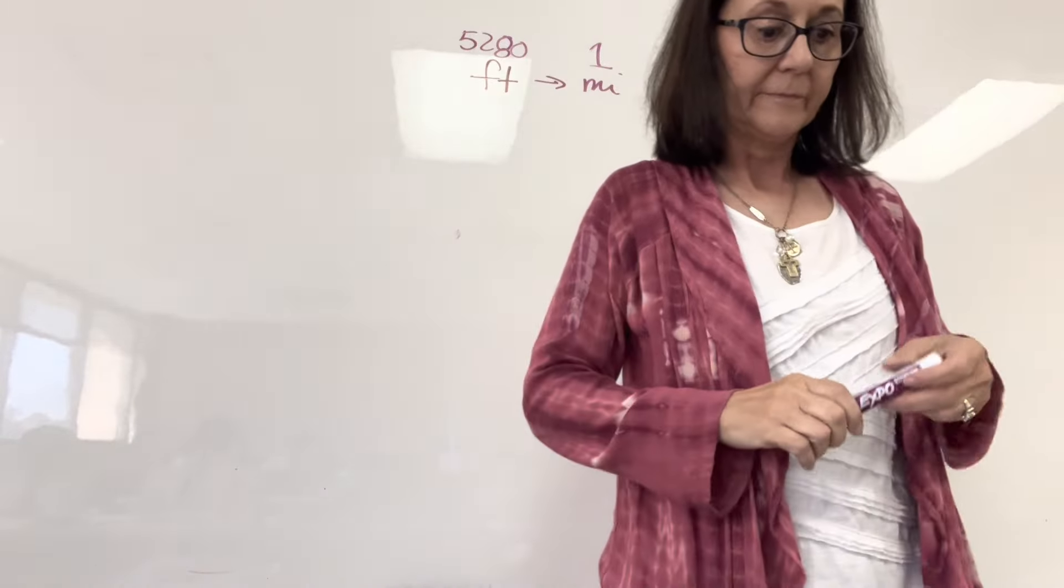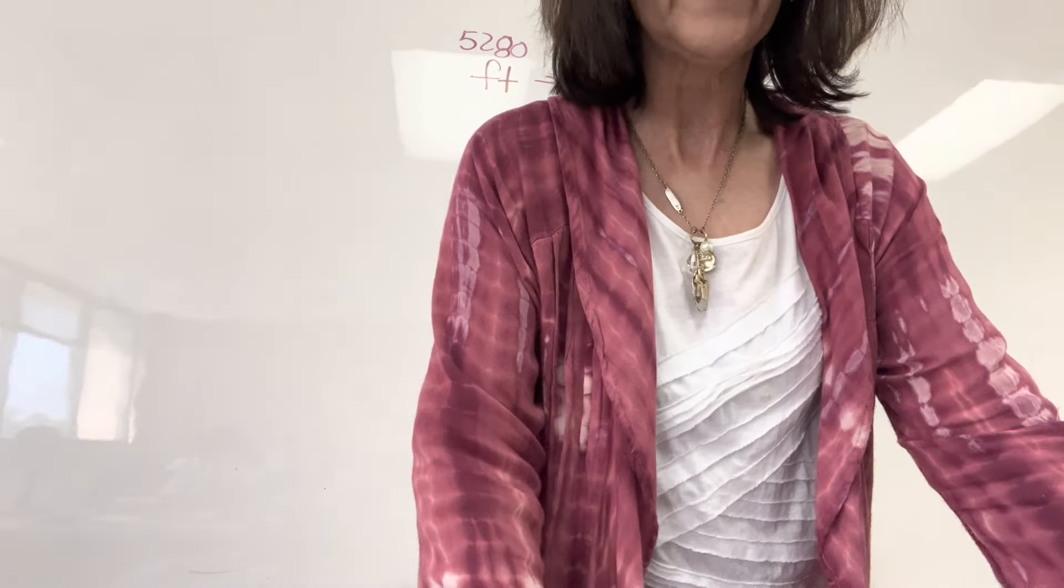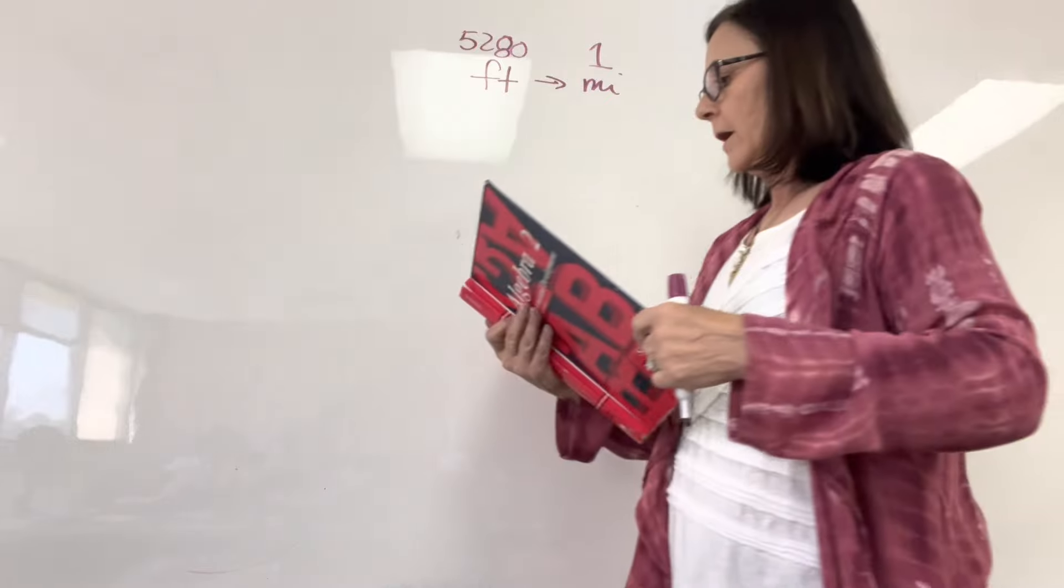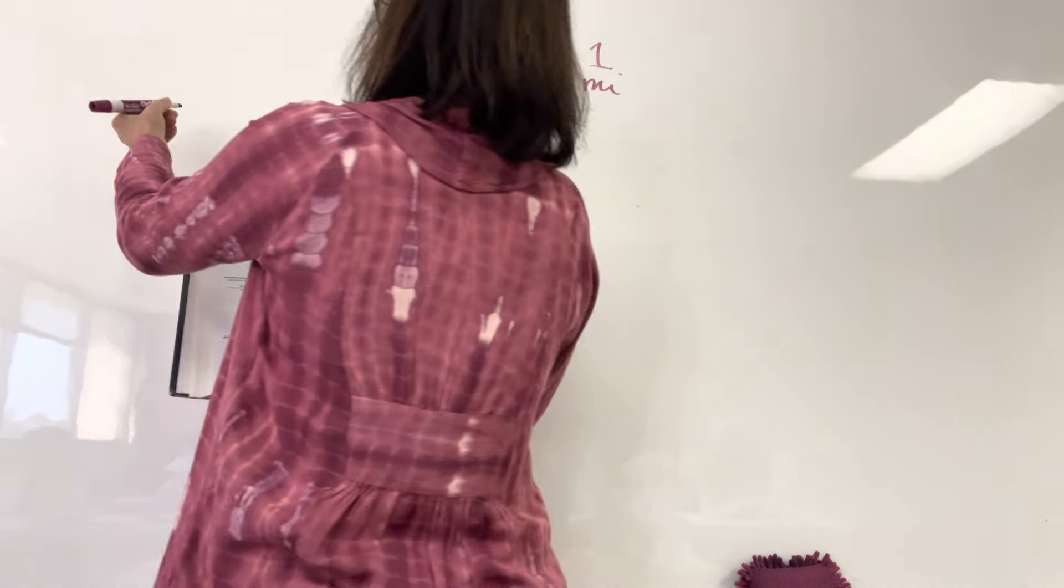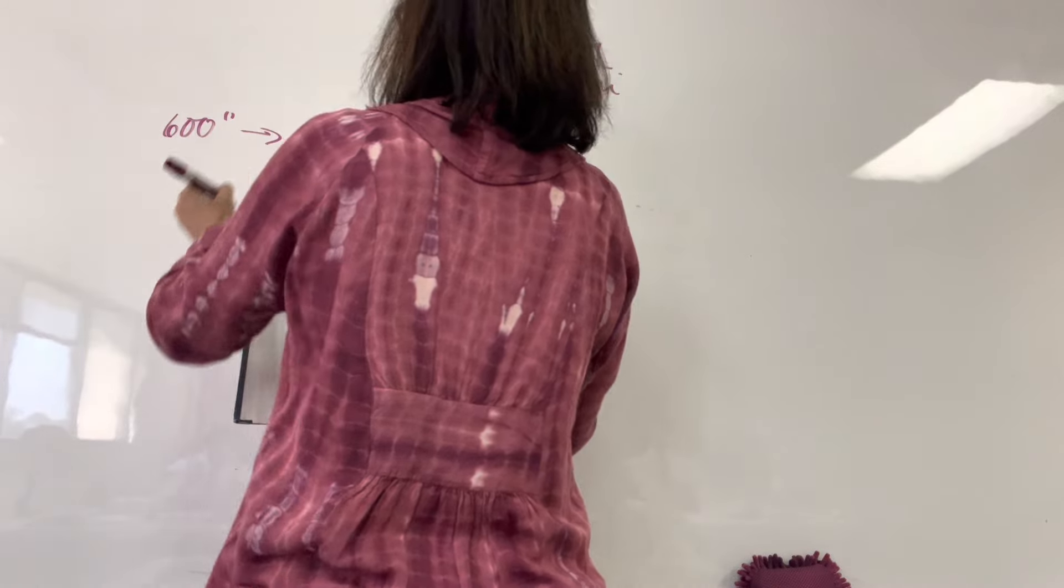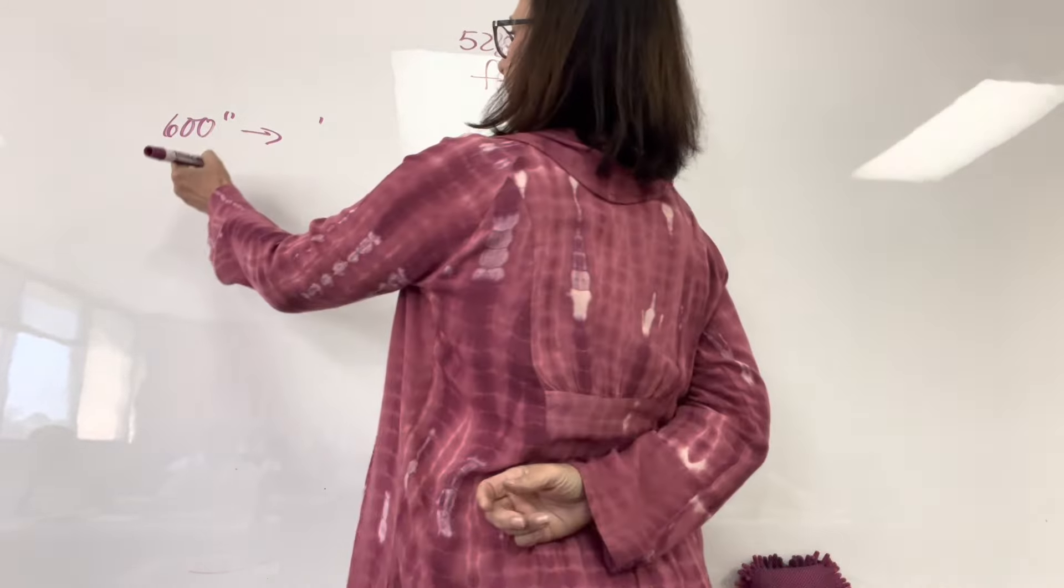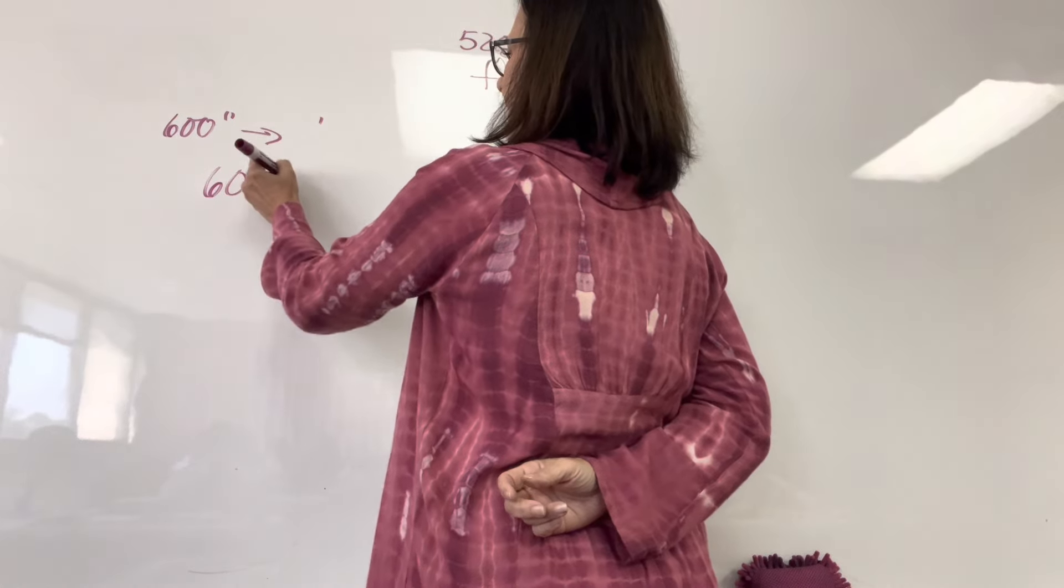5,280 feet in one mile. All right. Let us walk through the examples. So I'm on top of page 185. Use unit multipliers to change 600 inches into feet.